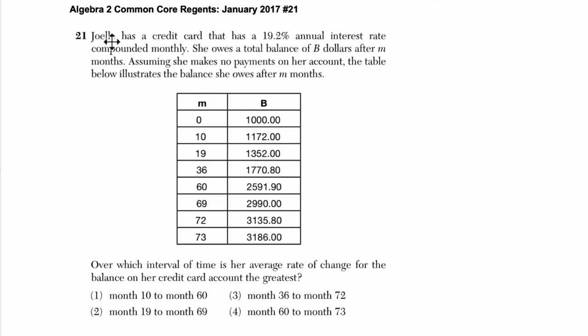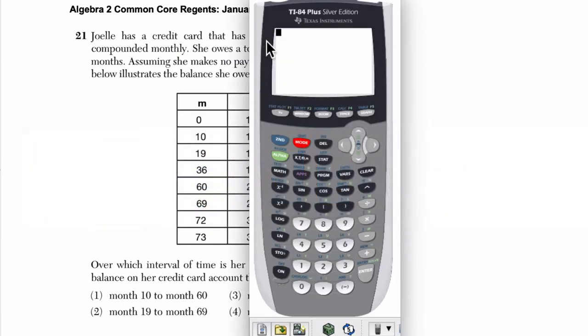Okay, so we're told that this person has a credit card that has a 19.2% annual interest rate compounded monthly. So 19.2% over the course of a year. But if it's compounded monthly, that's 19.2 divided by 12. Just going to reason that out. So 19.2 divided by 12 is 1.6, so there's 1.6% interest being charged each month.